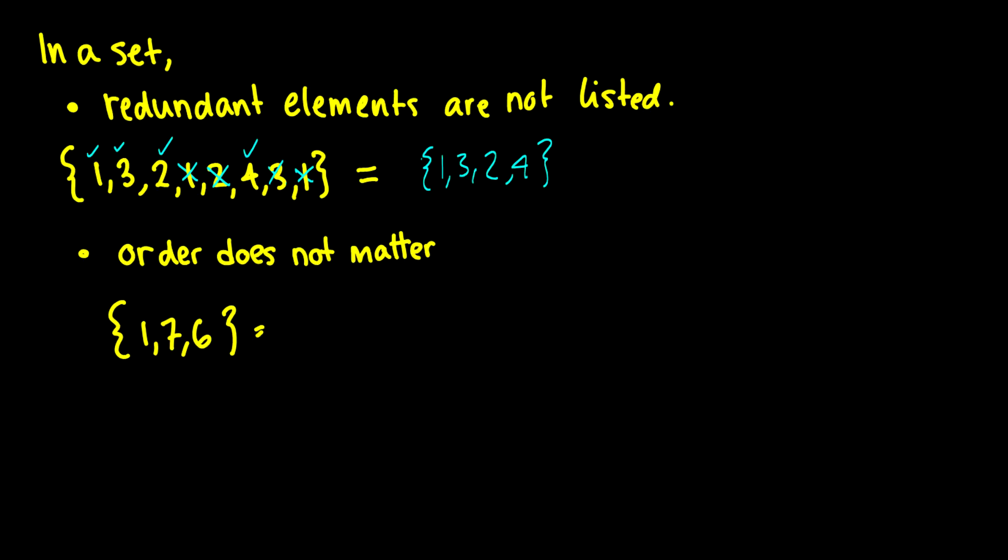And of course order does not matter in a set. It is just a list of items, there is no specific order that these items are in. So if we have a set 1, 7, 6, we can rearrange this to be 7, 6, 1, and that's okay.